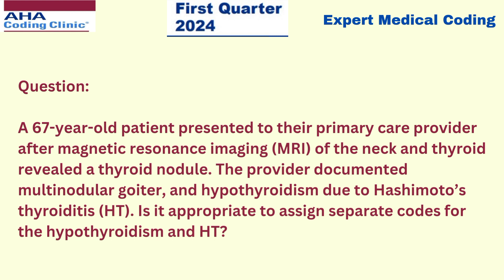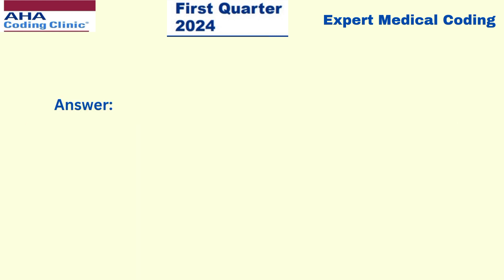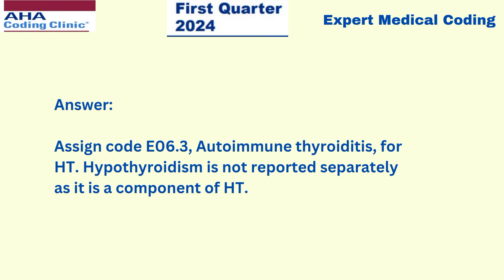Now the question here is: is it appropriate to assign separate codes for hypothyroidism and Hashimoto's thyroiditis? The answer is to assign code E06.3, that is autoimmune thyroiditis, for Hashimoto's thyroiditis. Hypothyroidism is not reported separately as it is a component of Hashimoto's thyroiditis.